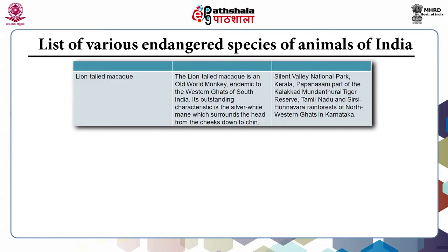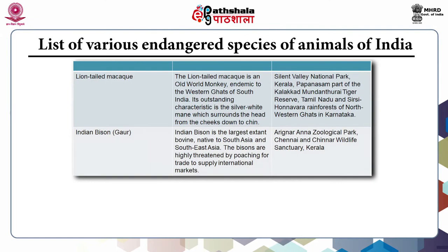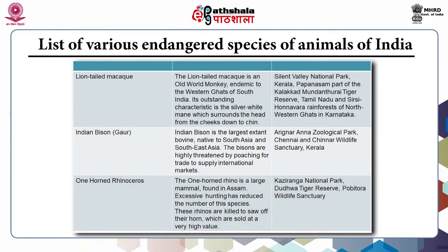The Indian Bison, also called Gaur, is the largest extant bovine native to South Asia and Southeast Asia. Bisons are highly threatened by poaching for trade to supply international markets. This animal is found in Arignar Anna Zoological Park, Chennai, and Chinnar Wildlife Sanctuary, Kerala. The one-horned rhinoceros is a large mammal found in Assam. Excessive hunting has reduced the number of this species, as these rhinos are killed to saw off their horns, which are sold at very high value. Kaziranga National Park, Dudhwa Tiger Reserve, and Pobitora Wildlife Sanctuary are the places where this one-horned rhinoceros is found.